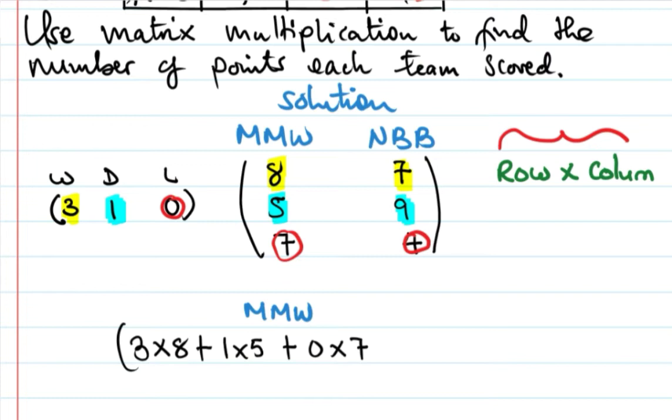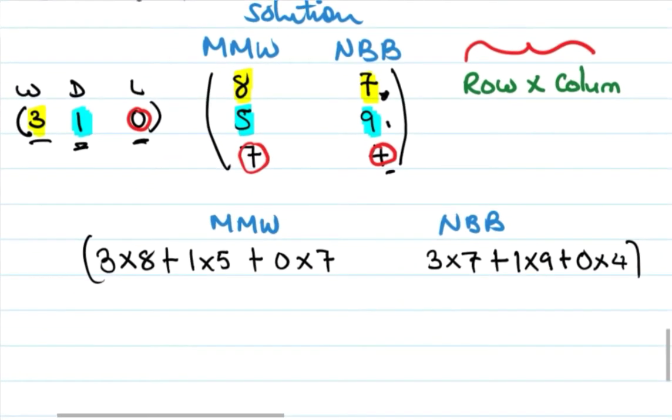For NBB, we have: 3 times 7, plus 1 times 9, plus 0 times 4.